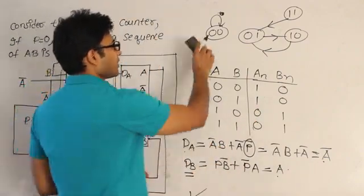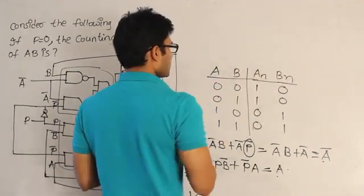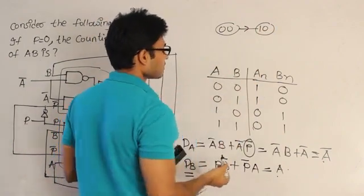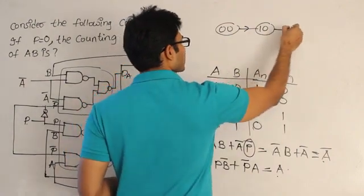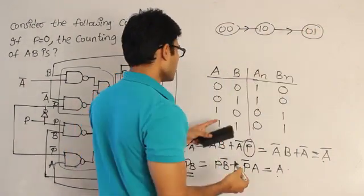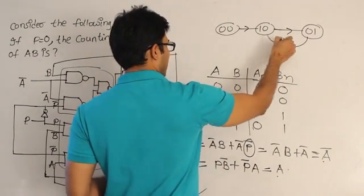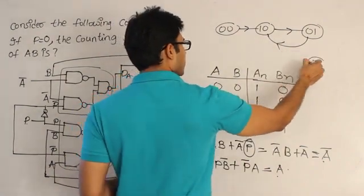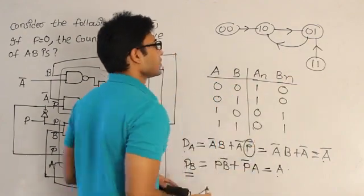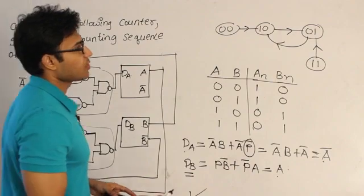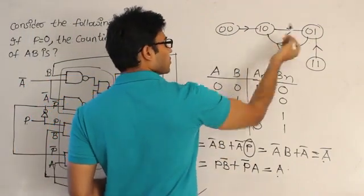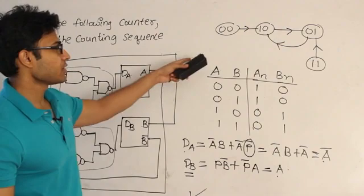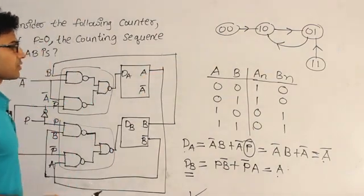Now with the corrected values: if you are in 0 0 you go to 1 0; from 1 0 you go to 0 1; from 0 1 you go back to 1 0; and from 1 1 you go to 0 1. So it is acting as a mod-2 counter. Wherever you start, it brings you into the counting sequence — therefore it is self-starting, but not free-running since it does not contain all states.